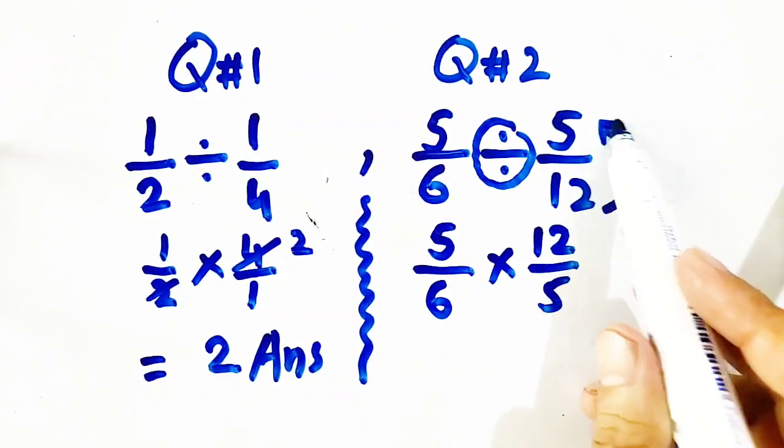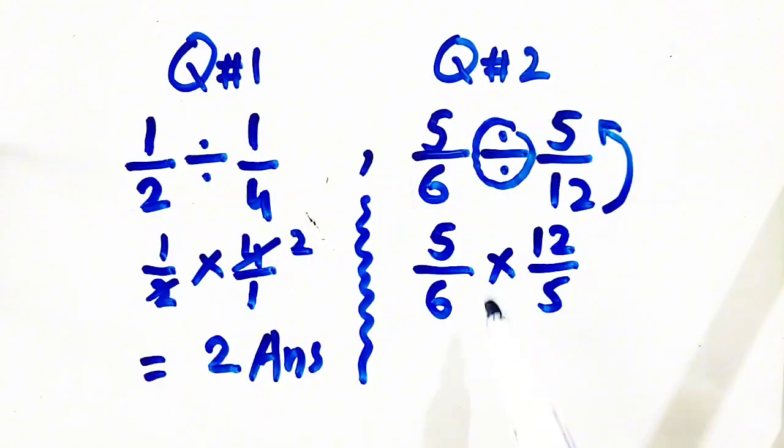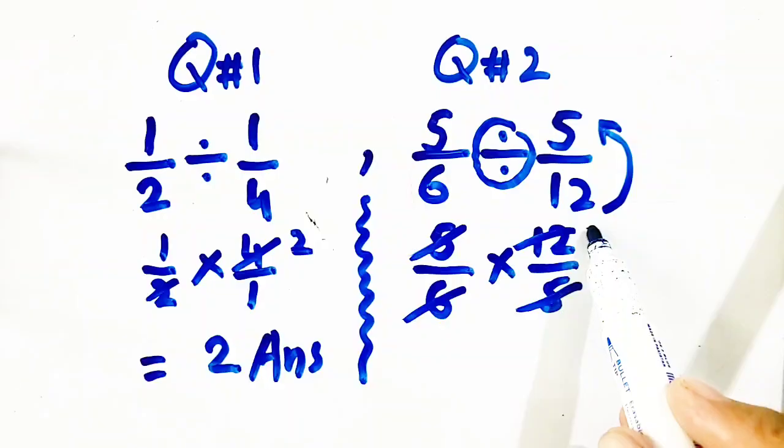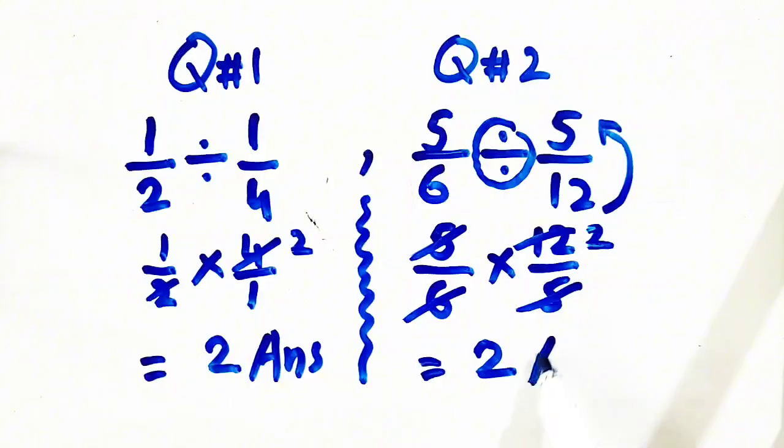Because we have flipped it, we will get here is cancellation. 5 is cancelled with 5, and 6, 2 times are 12, so here answer is 2. In both cases, answer is 2.